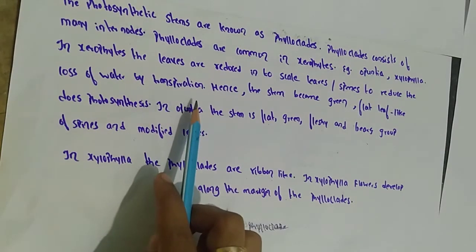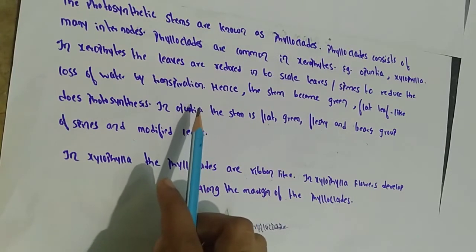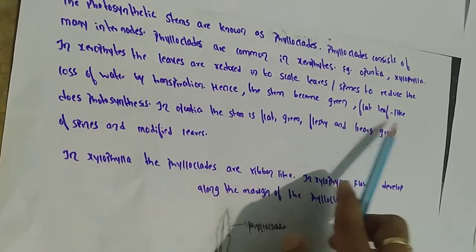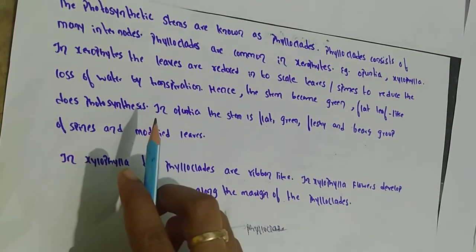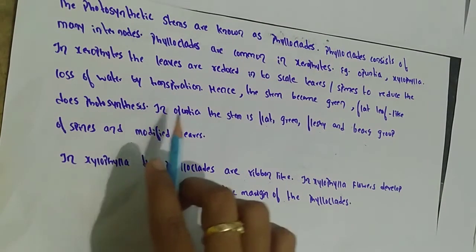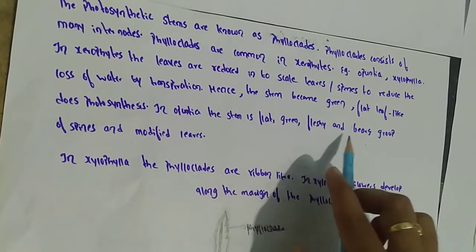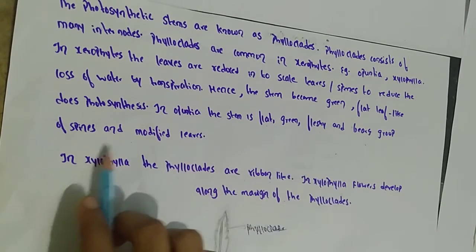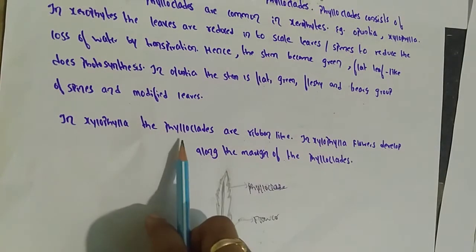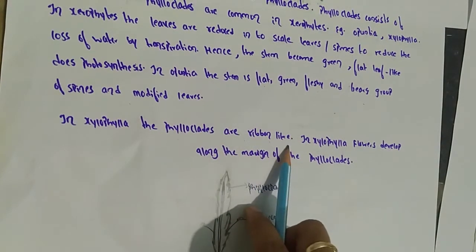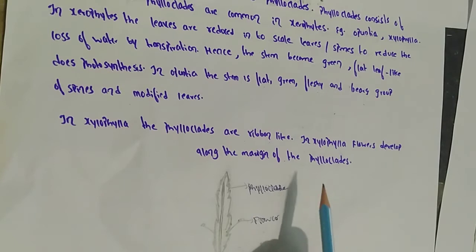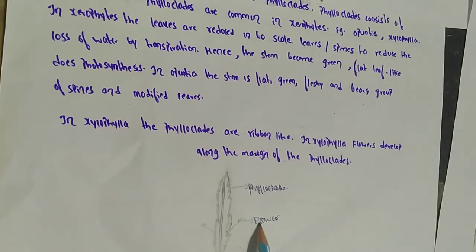Transpiration is the process of water movement through a plant and its evaporation from parts like leaves, stem, and flowers. Hence the stem becomes green and flat, performing photosynthesis. Examples are Opuntia and Xylophylla. In Opuntia, the stem is flat, green, and fleshy, and bears groups of spines and modified leaves. In Xylophylla, the phylloclades are ribbon-like, and flowers develop along the margin of the phylloclades.